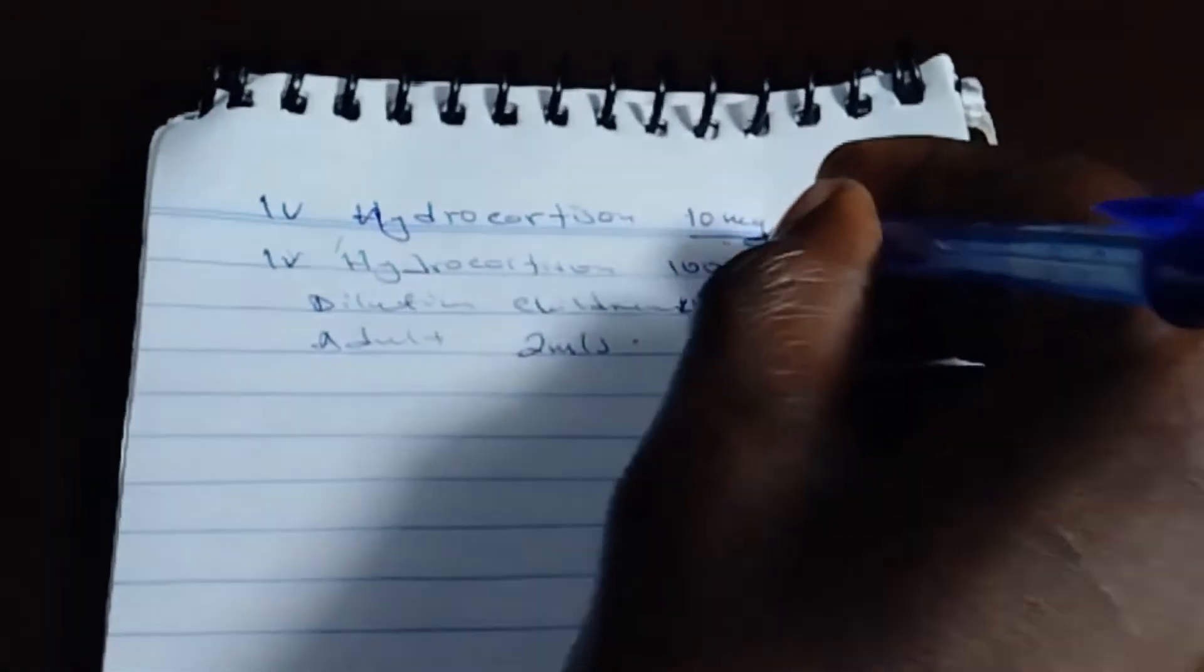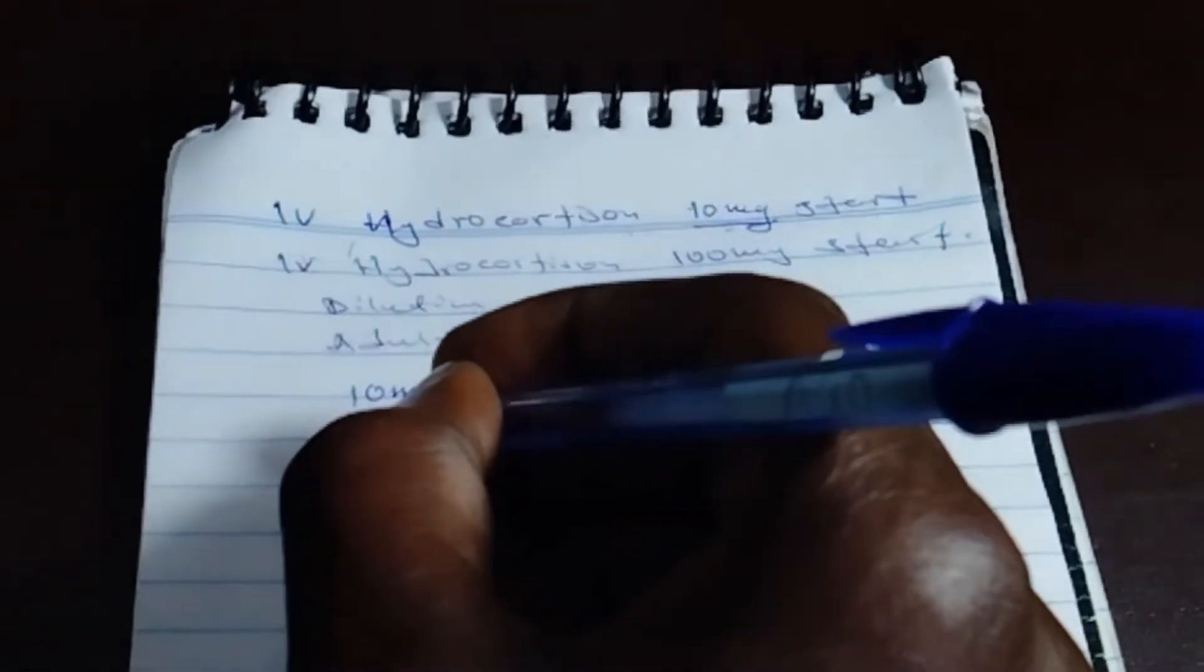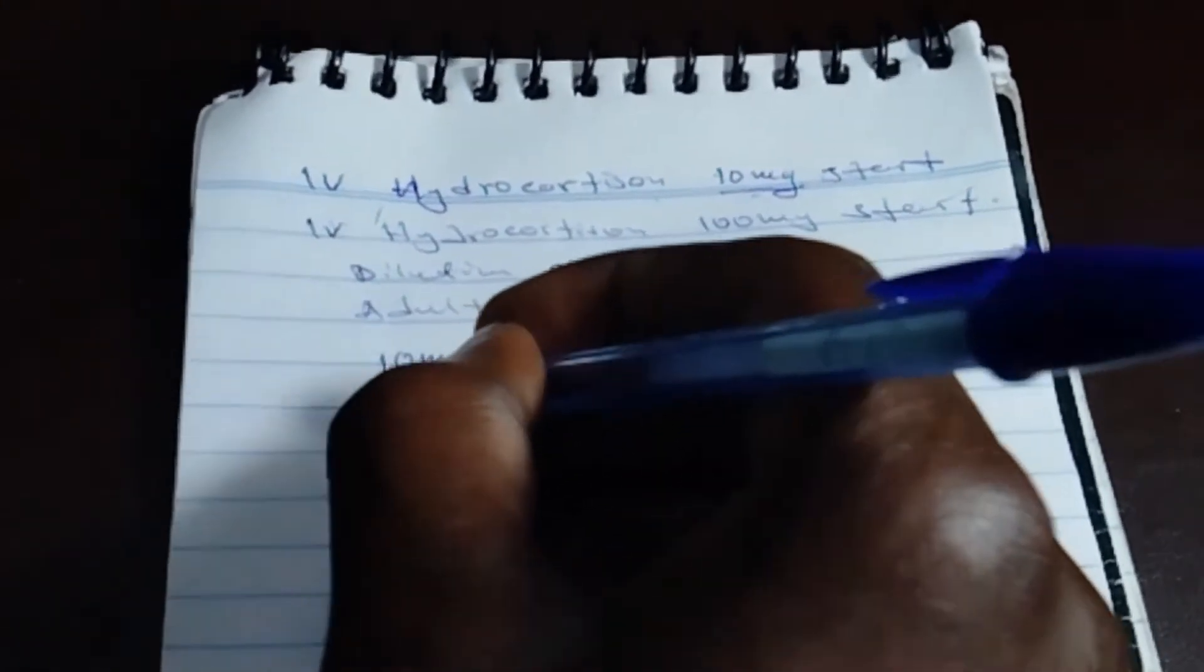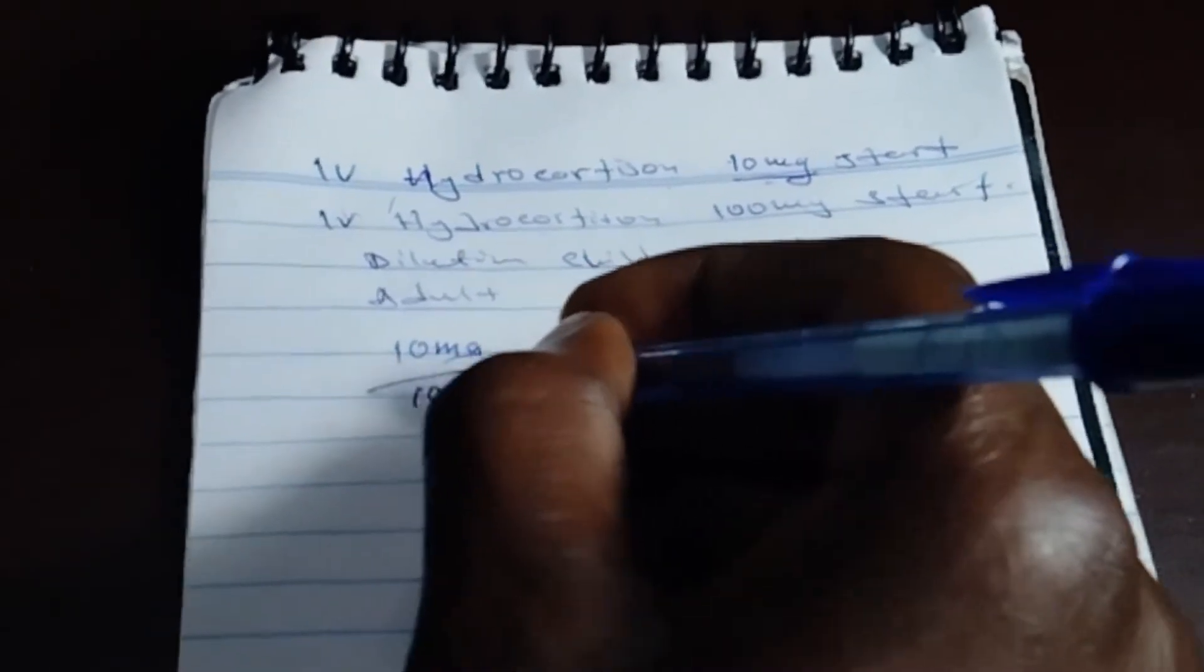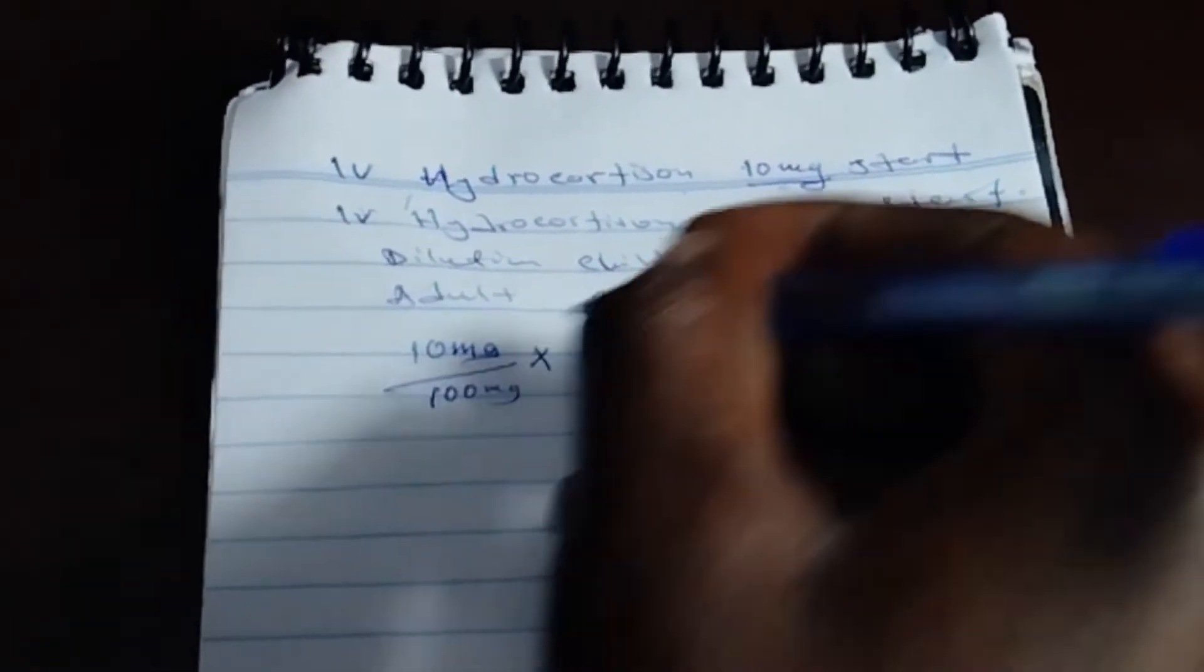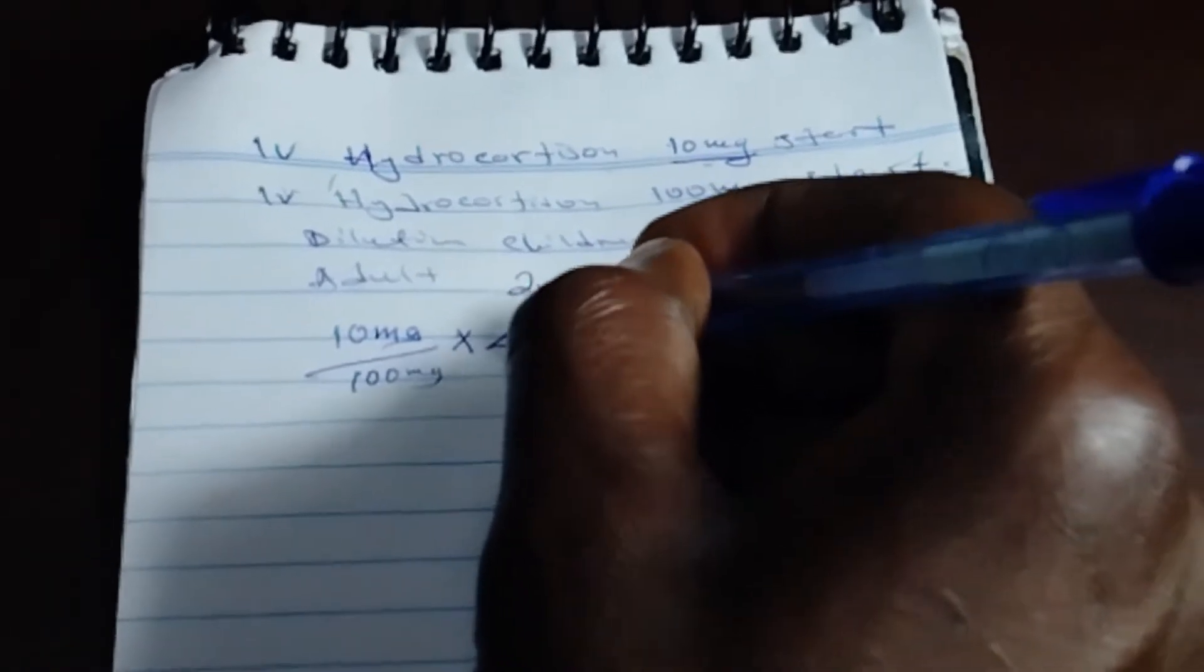Prescribed milligram, that is 100, no, 10 milligrams divided by 100 milligrams times four mills.